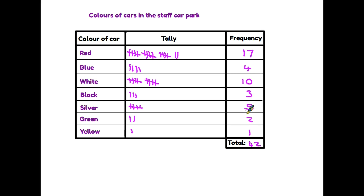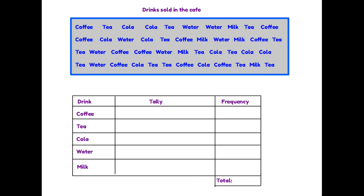Let's have a look at a typical type of question you might find in a test or exam. The top box here gives us information about drinks sold in the cafe — someone has written down the name of each drink as it has been sold. Your job is to complete the tally chart and frequency table using the information in the top box. You need to count up the number of each drink.